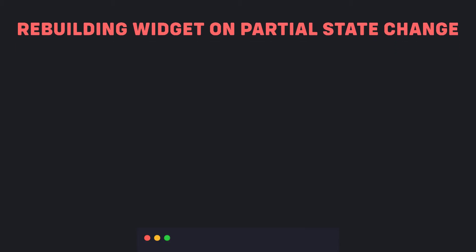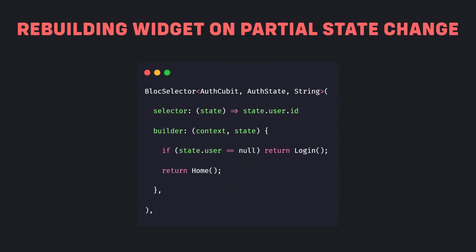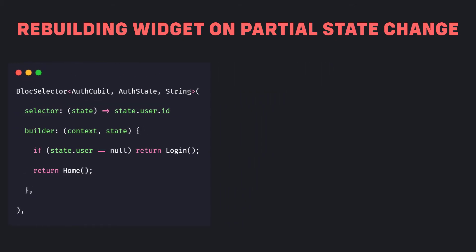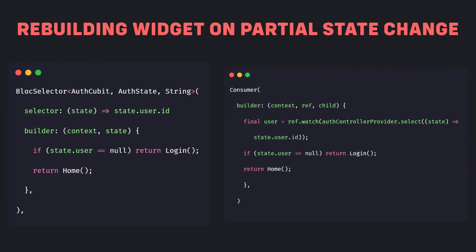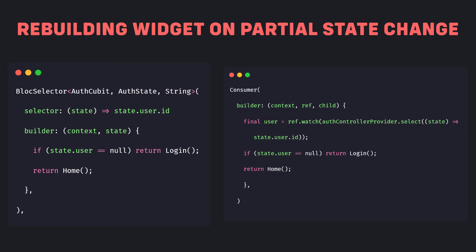Rebuilding widget on partial state change: if we have a screen governed by one state object which consists of multiple widgets representing a part of that state, we do not want the whole screen to rebuild when only a part of the state changes. Bloc has a BlocSelector widget that allows you to listen to changes of a part of the state. With RiverPod you have to change the code which subscribes to the state a bit, but you are still using the Consumer widget.